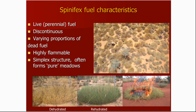Spinifex is a live fuel. It's discontinuous, as you can see from the shots. In a mature spinifex meadow, ground cover ranges from around 35% to 70%, commonly around 50%. It does have varying proportions of dead fuel — generally the proportion of dead fuel increases as the meadow ages with time since fire. Because of its physical arrangement, fine foliage, and sometimes the resin and chemical composition of spinifex, it's highly flammable. I've characterised it — if it were continuous rather than patchy — as the perfect wildland fuel in terms of its physical structure. Spinifex meadows exist as fairly simple structures: a ground cover of spinifex with scattered shrubs, and occasionally an overstorey of mallee or trees such as marblegum.